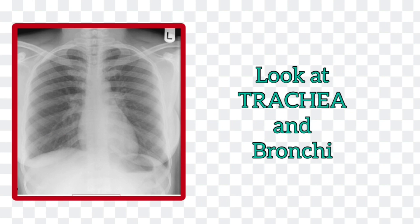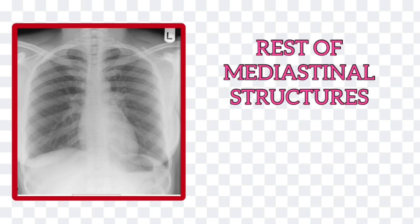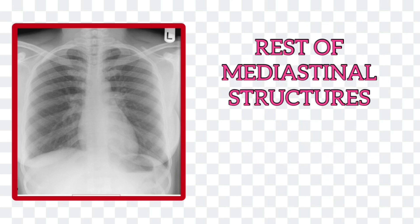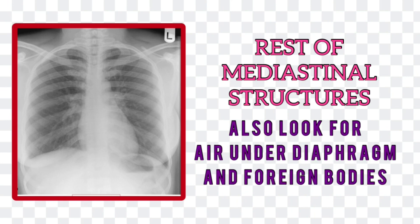Now look at the trachea — it should be central, but slight deviation towards the right around the aortic knuckle is normal. Look at the rest of the mediastinum. Apart from the heart and trachea, the mediastinum contains the great vessels, esophagus, nerves, thymus, and lymph nodes.